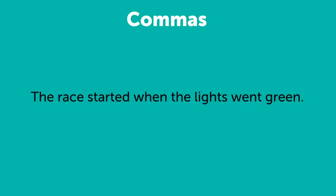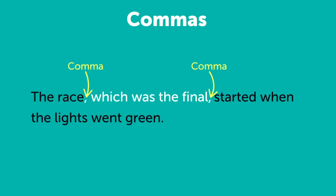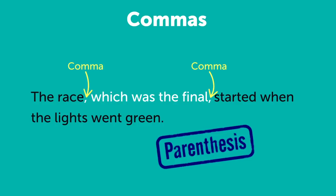Commas are the third type of punctuation used to insert extra information. The race, which was the final, started when the lights went green. One comma is used before the phrase containing the extra information and one at the end, separating it from the main part of the sentence. The formal term used to describe this is parenthesis — this means the extra information with its punctuation.